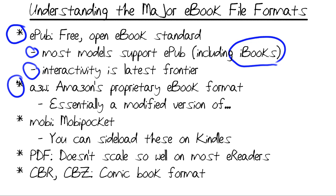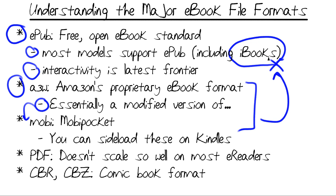The .azw file format is Amazon's proprietary format. Essentially, AZW is a modified version of the Mobi standard — M-O-B-I, that's Mobi Pocket. For this reason, you'll find that Amazon Kindles can read AZW and Mobi. However, be aware of this if you haven't yet purchased an e-reader: an Amazon Kindle cannot read EPUB. That's one of those competitive business model things, I have a feeling. Because, as I said, Apple supports EPUB, Barnes & Noble supports EPUB — Amazon went the Mobi Pocket route.